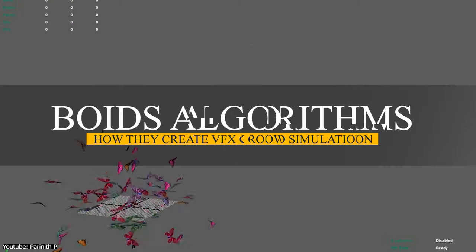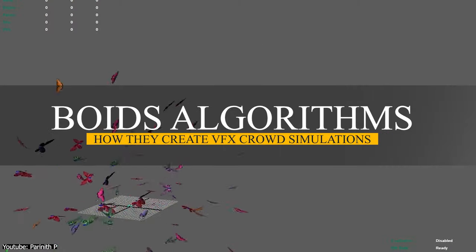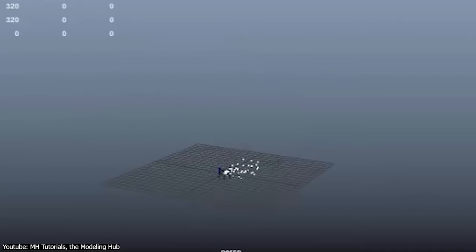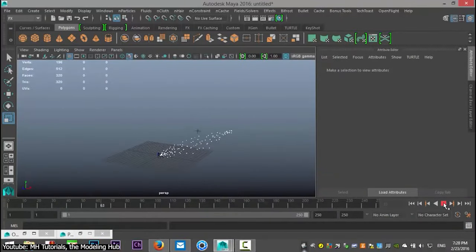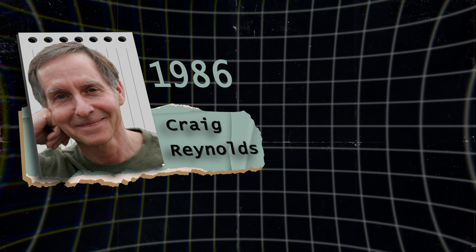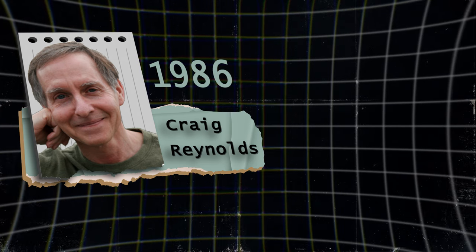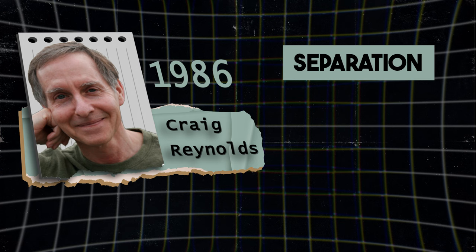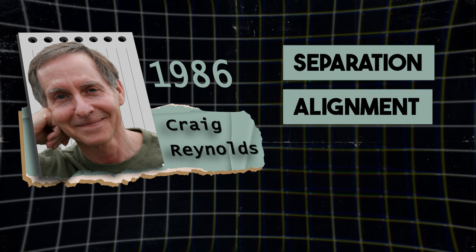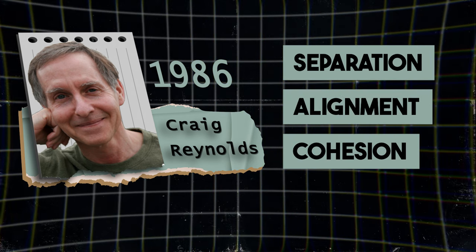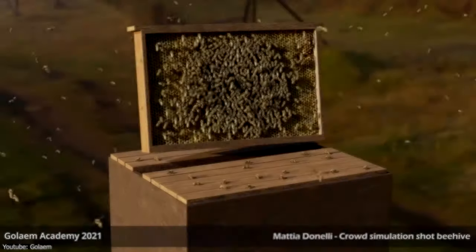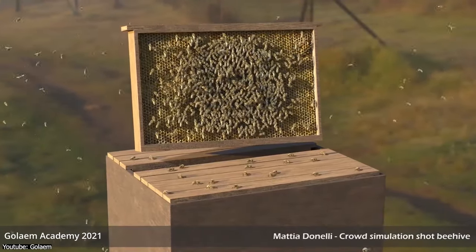One of the most important techniques is Boid's algorithm. When creating a swarm of fish or a flock of birds, VFX artists usually rely on Boid's algorithm. Proposed by Craig Reynolds in 1986, it follows three basic rules: separation, alignment, and cohesion. These govern the movement of each Boid to make it look as believable as possible. This algorithm has also been adapted for various crowd scenarios beyond just flocking.